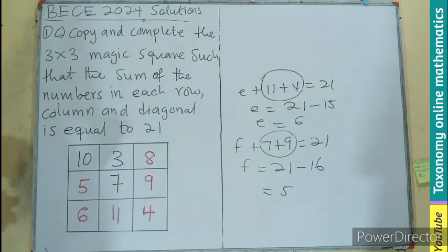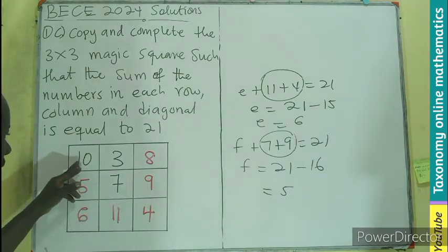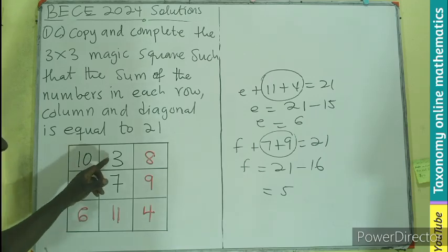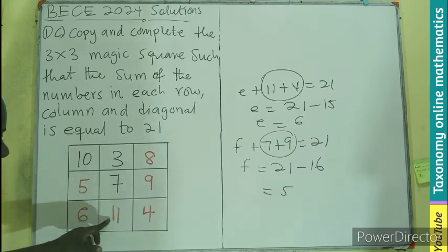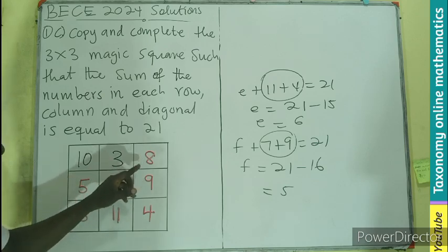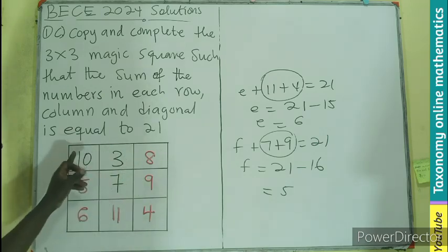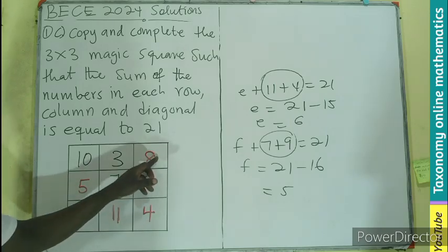So you can cross-check and see what you have done is actually correct. This plus this is 15 plus this, 21. 10 plus this, 21. This is going to be 17 plus this, 21. Already diagonal is 21.